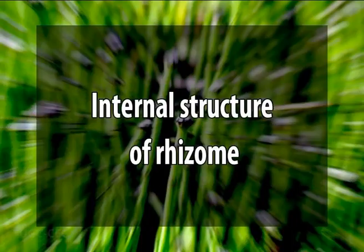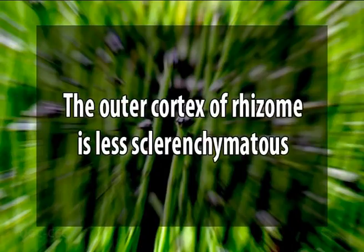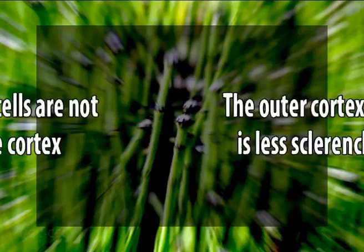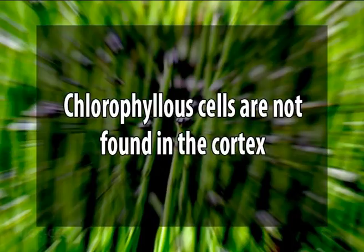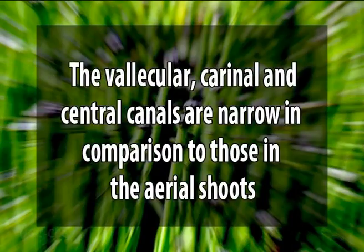Now we will discuss the internal structure of the rhizome. It shows certain features different from the aerial shoot: the epidermis of the rhizome is without stomata; the outer cortex of the rhizome is less chlorenchymatous; chlorophyll cells are not found in the cortex; and the vallecular, carinal, and central canals are narrow in comparison to those in the aerial shoot.